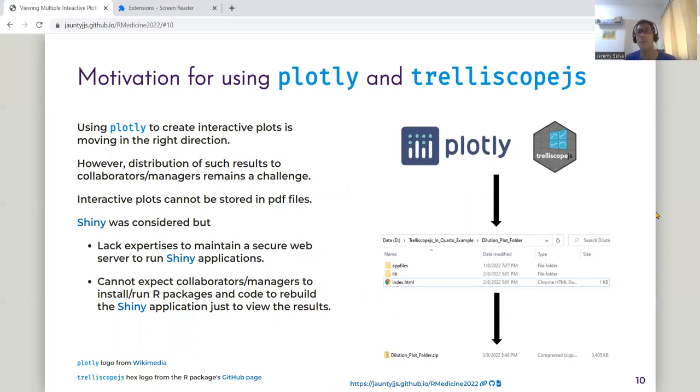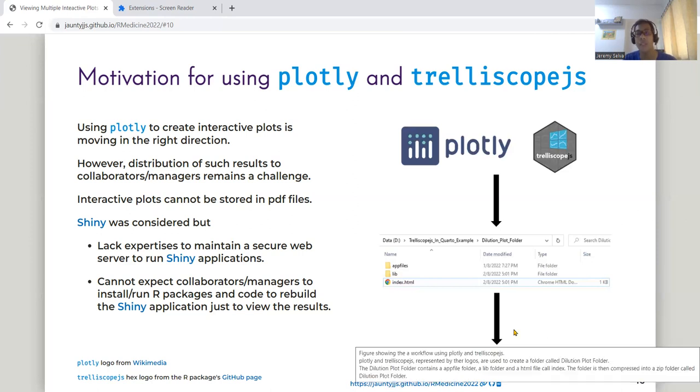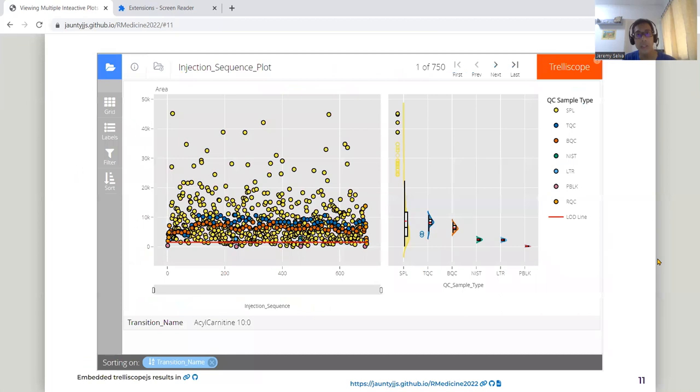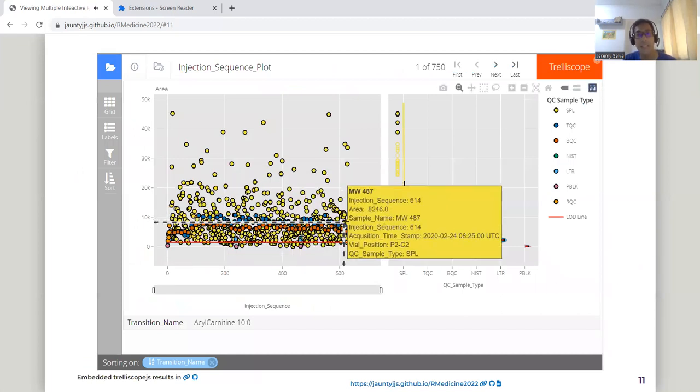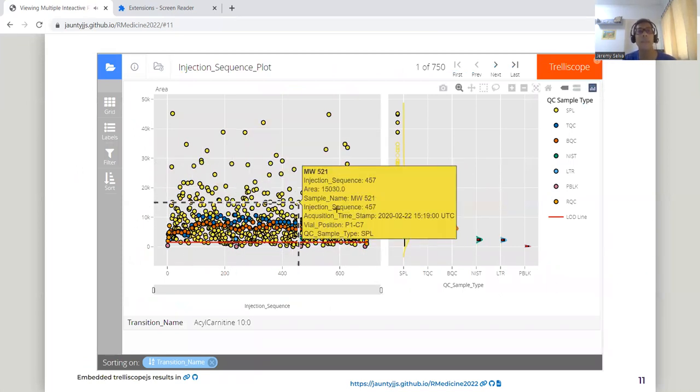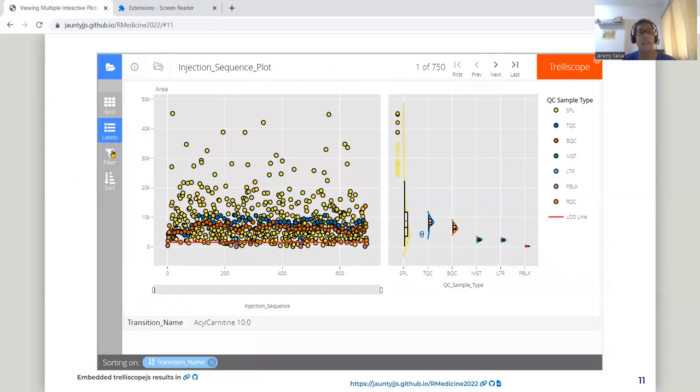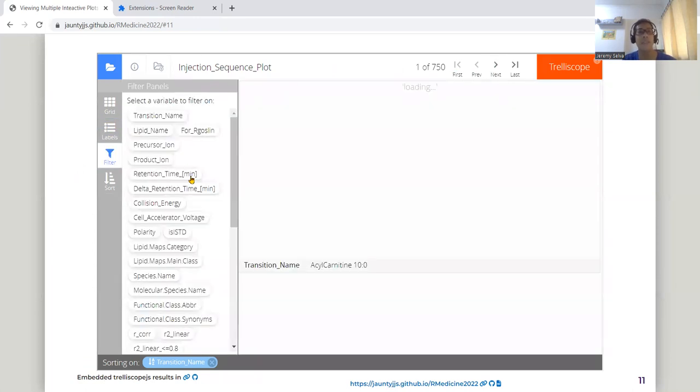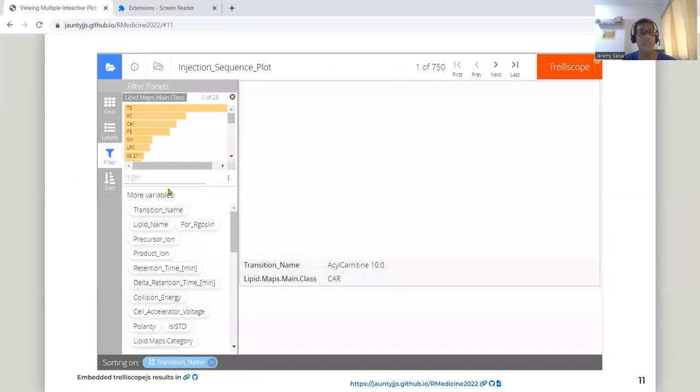Trelliscope.js is able to create these kind of outputs such that I can compress the folder into a zip file and send the data to them. And when they have the data, they can just double click on this index.html file to give a result something like this, where they can see all these plots. And they can also filter them based on their favorite transition classes.